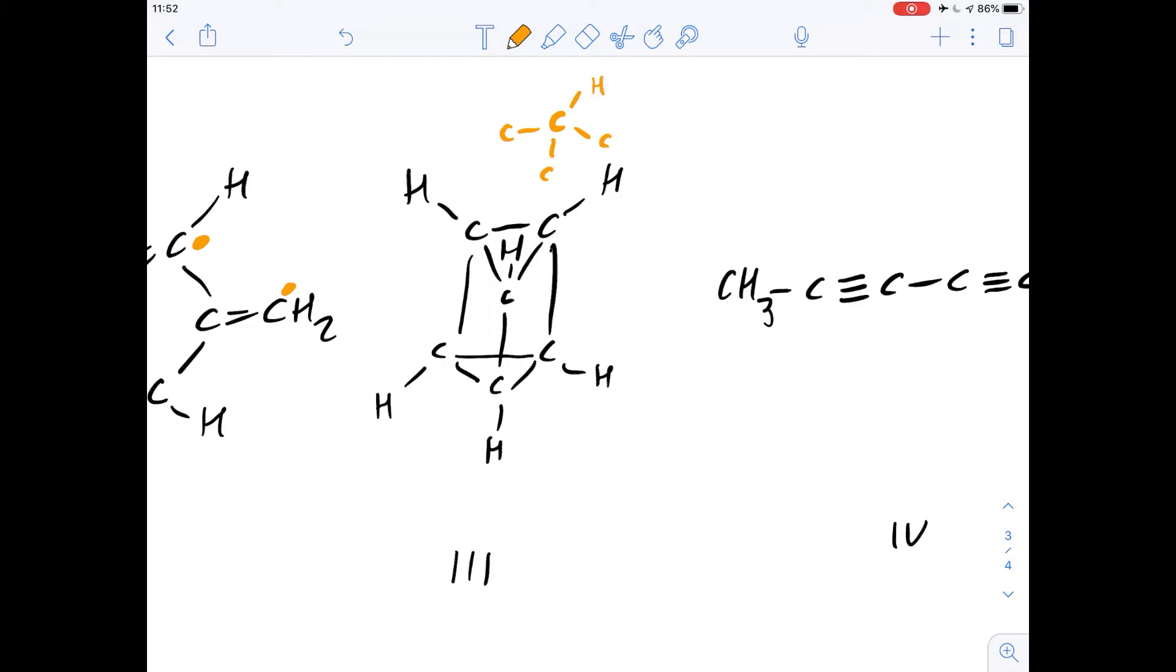It doesn't matter which hydrogen we replace because all the carbon atoms are the same. So that means there's only going to be one isomer because no matter which one we look at, it will always be the same isomer that's produced.